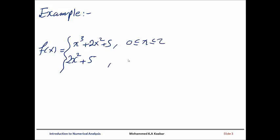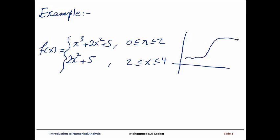This is from 0 less than x less than 2, and 2 less than x less than 4. These are sub-intervals. You will have a graph like this — you need to approximate each sub-interval differently. Therefore it is called piecewise polynomial approximation.